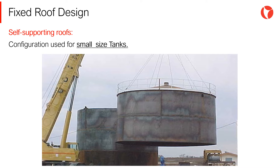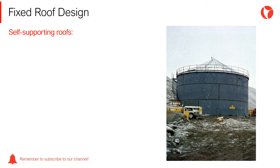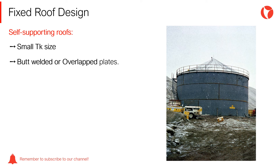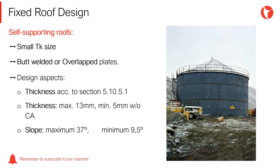Self-supporting roofs can adopt any of the three configurations mentioned earlier: conical, dome type, or umbrella type. The main characteristics of self-supporting roofs are that they are used for small tank sizes; roof plates are normally butt-welded but can be overlapped. Regarding the design, the thickness is calculated according to section 5.10.5.1, with a maximum thickness of 13 mm and a minimum thickness of 5 mm without any corrosion allowance. The maximum slope is 37 degrees and the minimum slope is 9.5 degrees.